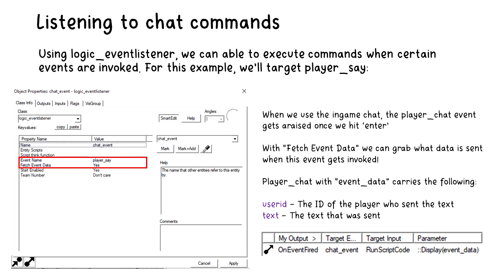With Hammer, we can listen to certain events fired within the game engine by targeting specific events. Here you see highlighted in red is Player Say — we are listening for when a user enters text within the game. Fetch event data is also turned on, meaning we want information returned back. Player Chat returns two attributes: the user ID, which we don't much care about, and the text attribute, which we do care about. On event fired, we reference the event itself — chat_event — run the run script code, and call the global function display with the event_data, which has the information from the event.